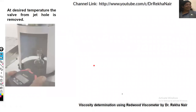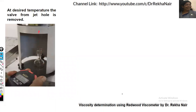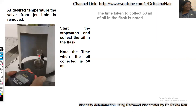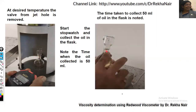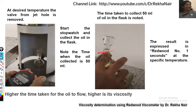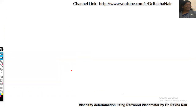At the desired temperature, the valve from the jet hole is removed and the stopwatch is started so as to collect the oil in the flask and note the time when the oil collected is 50 ml. The time taken to collect 50 ml of oil in the flask is noted and this time is expressed as Redwood seconds at that specific temperature. Higher the time taken for the oil to flow, higher will be the viscosity.